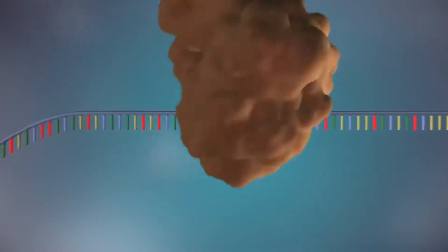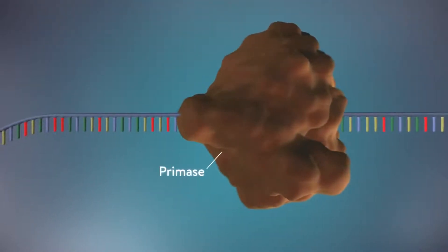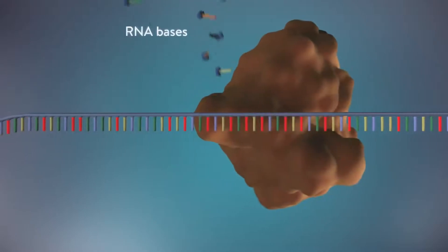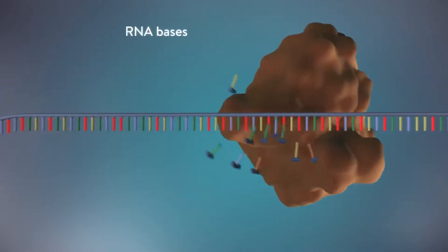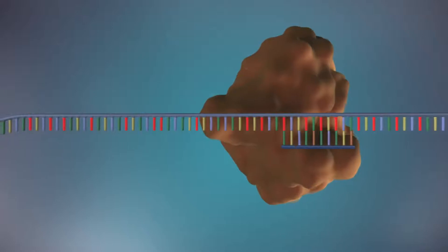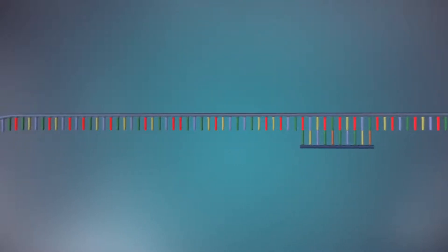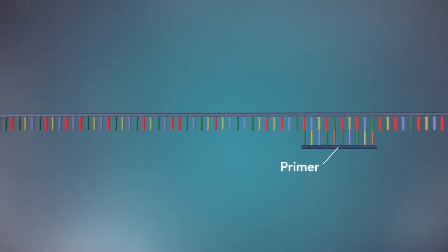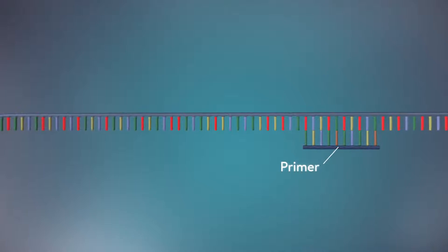An enzyme called primase starts the process. This enzyme makes a small piece of RNA called a primer. This marks the starting point for the construction of the new strand of DNA.